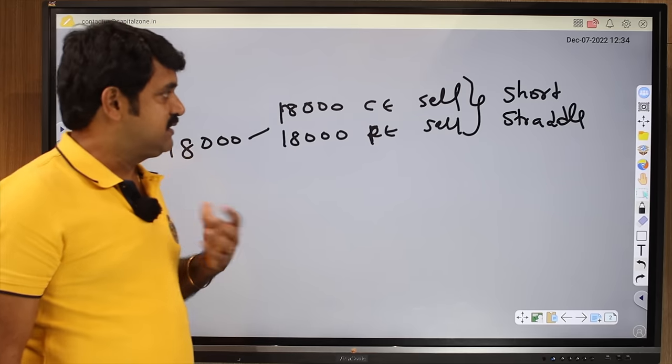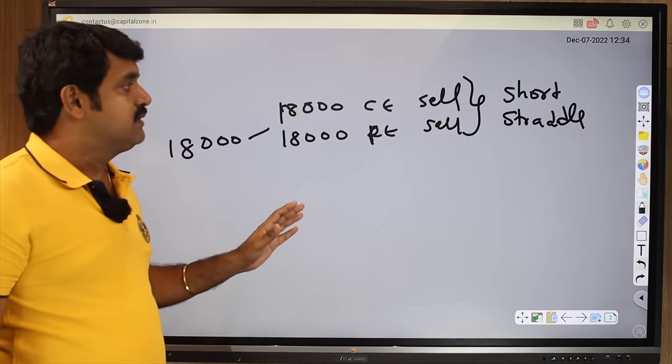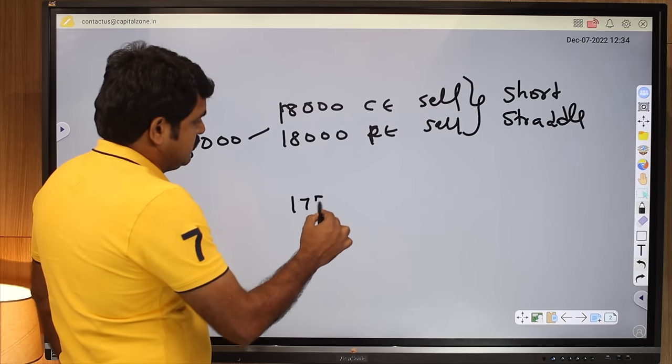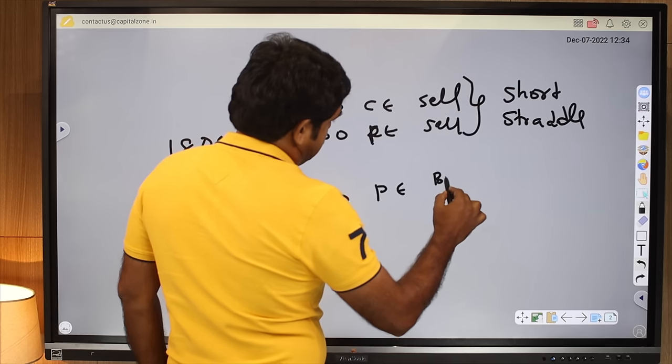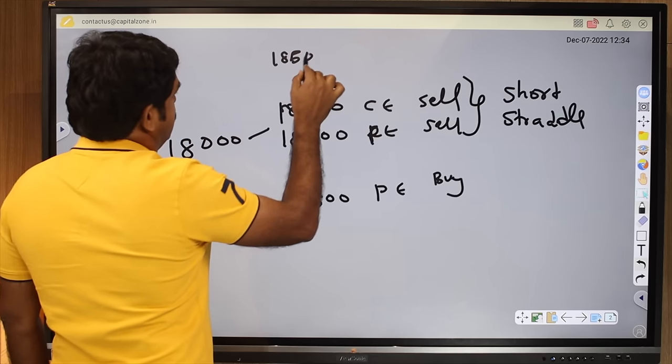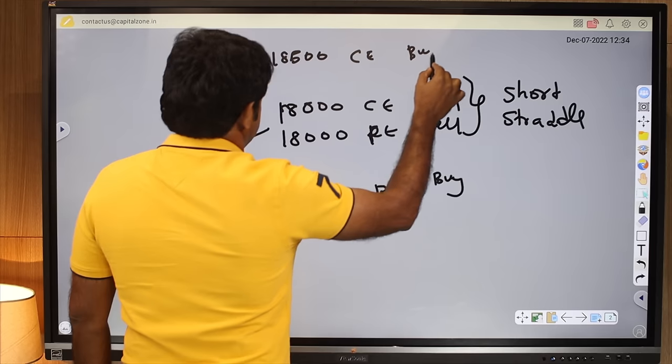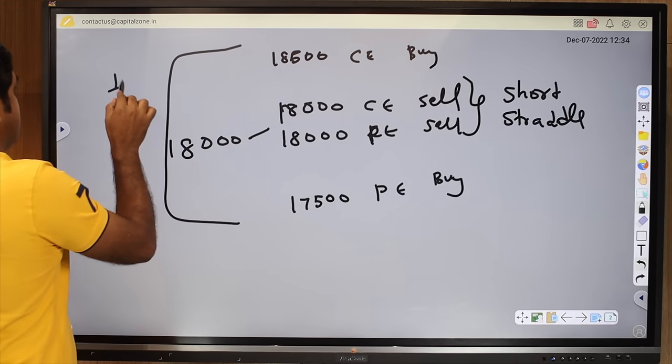Let's do the risk defined. In such a way that they will buy the put and they will sell the call for the hedging. For example, 17,500 buy and 18,500 call buy.